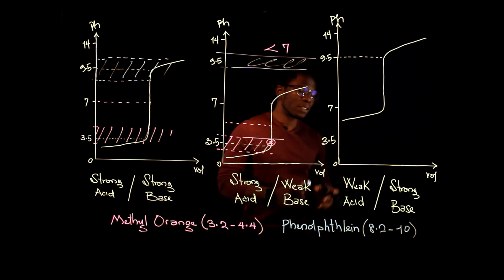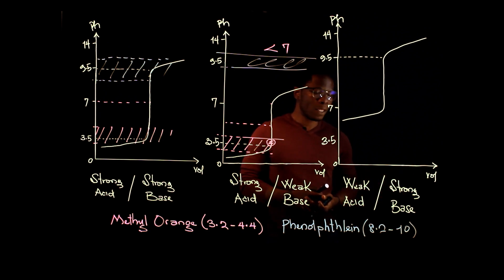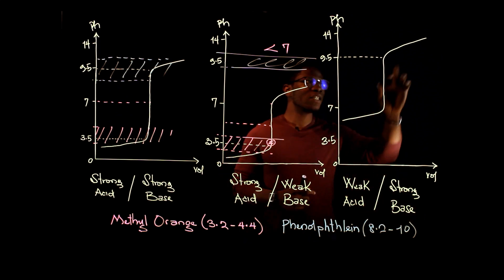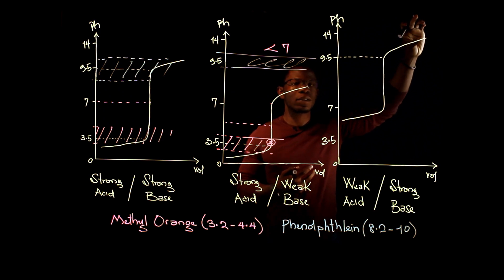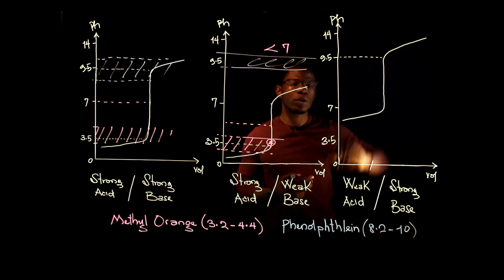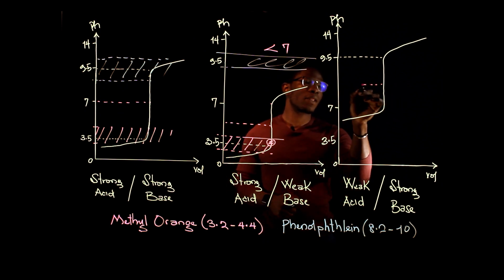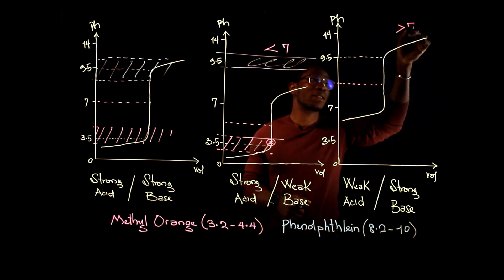Finally, let's look at a case where we have a weak acid, such as nitrous acid, reacting with a strong base such as sodium hydroxide. Since it's a weak acid, the pH value of the acid is going to be closer to 7. And because it's a strong base, the final pH will be closer to 14 — very high. The curve is shifted upward, and we notice that the equivalence point here is greater than 7.